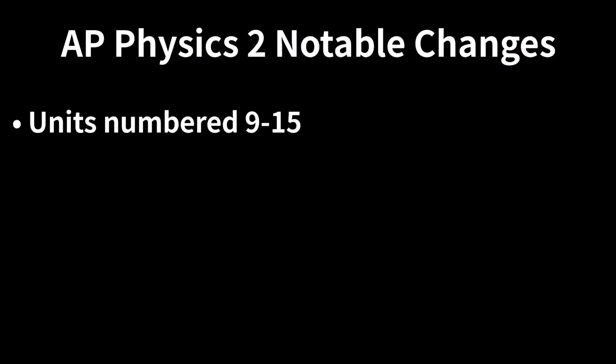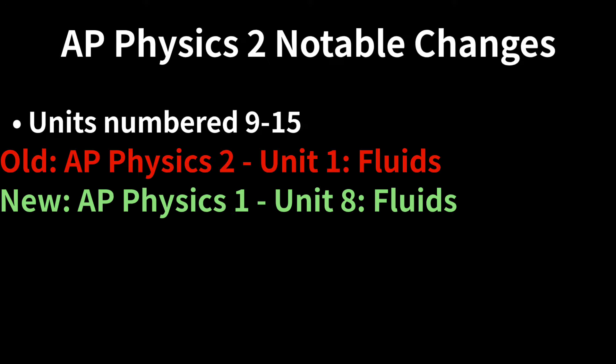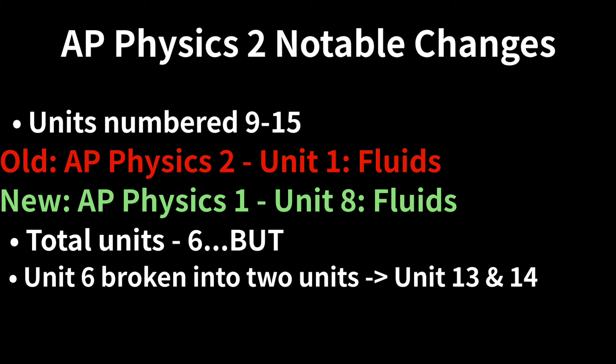Now onto AP physics two, to depict AP physics two as a sequential course to AP physics one, units will range from nine to 15. As aforementioned fluids unit has moved from AP physics two to one, bringing unit count to six from seven, but unit six geometric and physical optics is now two separate units, geometric optics unit 13 and waves sound and physical optics unit 14, bringing unit count back up to seven.